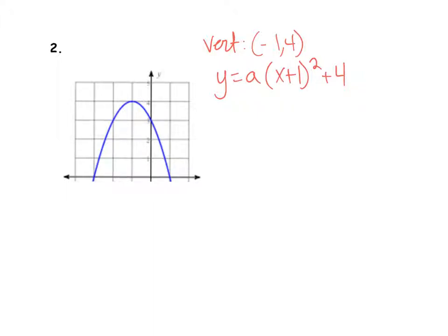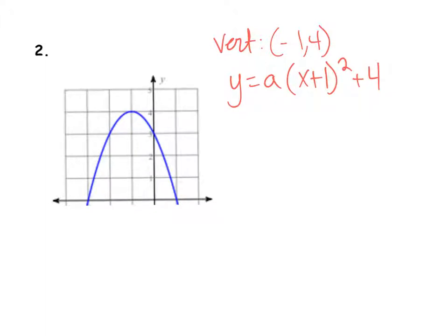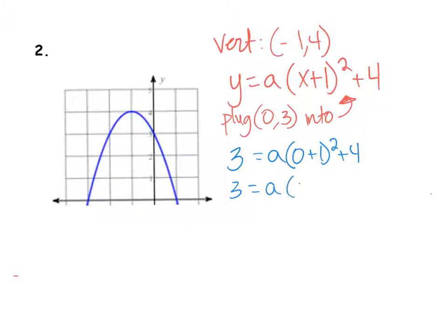Pick any point. Zero comma three, that's good because it has a zero in it. Y three equals A, I don't know. X zero plus one squared plus four. Three equals A times one squared plus four. Again, one squared. Three equals A plus four. This is downward facing, so tell me what's going to for sure happen. It's going to be a negative. Minus four both sides. A equals negative one.